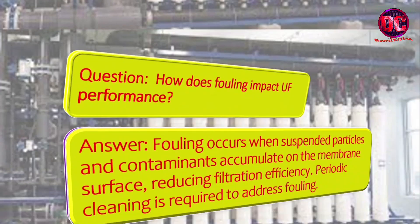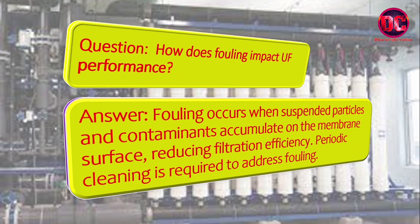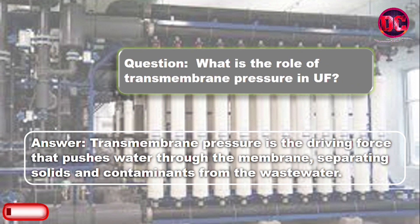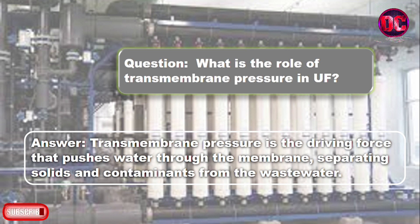How does fouling impact UF performance? Fouling occurs when suspended particles and contaminants accumulate on the membrane surface, reducing filtration efficiency. Periodic cleaning is required to address fouling. What is the role of transmembrane pressure in UF? Transmembrane pressure is the driving force that pushes water through the membrane, separating solids and contaminants from the wastewater.